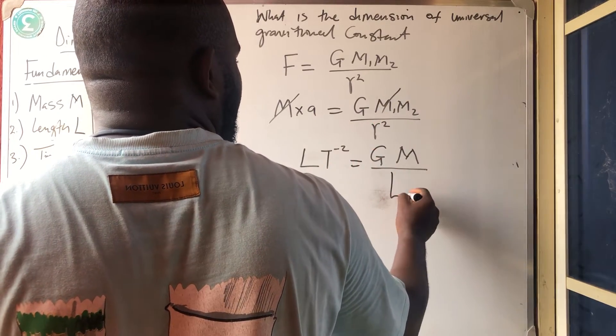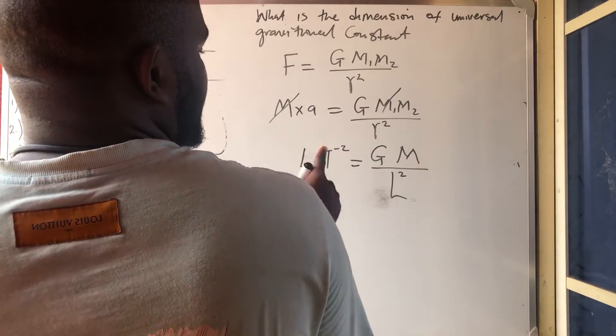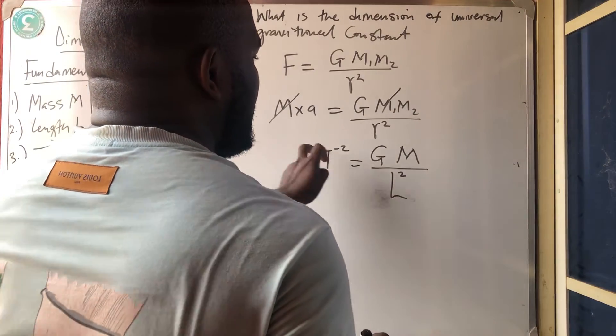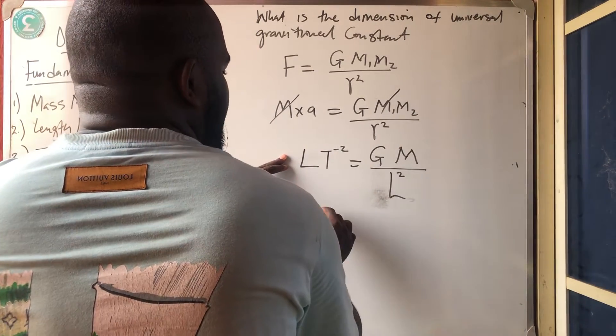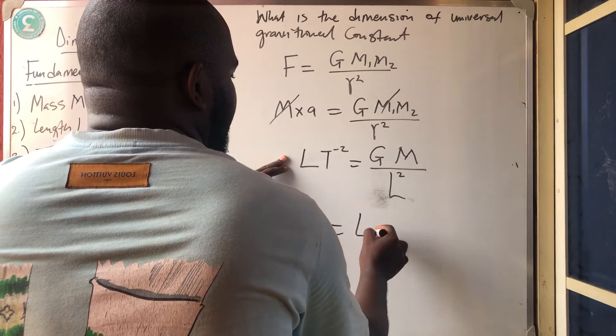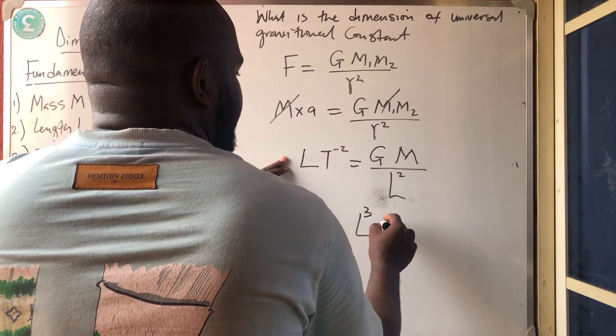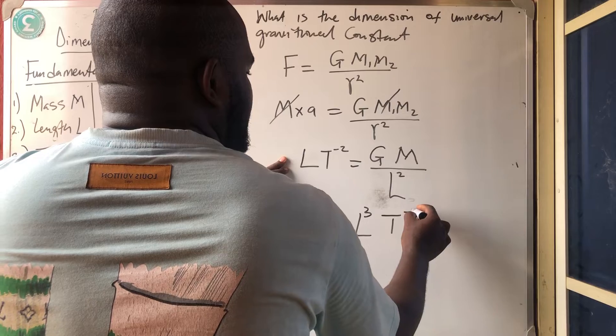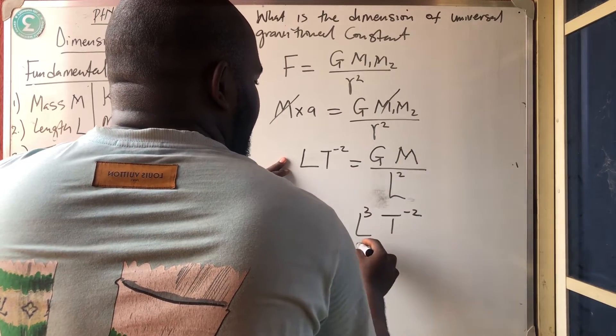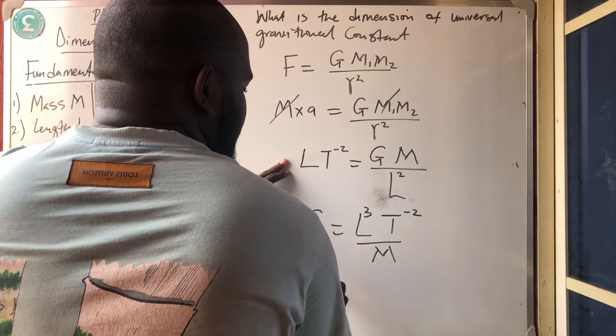So I'll say L2. So if I cross multiply so that G will stay low, this one will come here and M will come down. So G is equal to L2 plus 1 is 3. Then T is minus 2. Then M will come down.